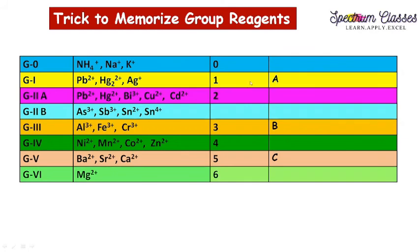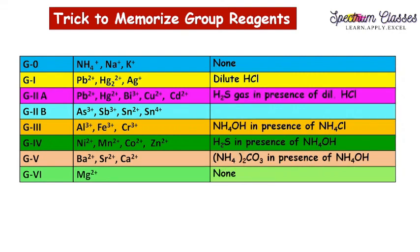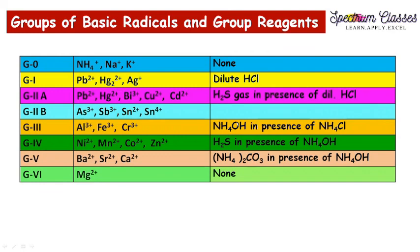For memorizing the group reagents, here is a funny but effective technique: remember ABC. 'A' is the first alphabet placed at the first odd group (Group One); 'B' is at the next odd group (Group Three); 'C' is at Group Five. A stands for acid, B stands for base, and C stands for carbonate. So Group One uses dilute acid, Group Three uses base (NH₄OH), and Group Five uses ammonium carbonate. Groups Two and Four are filled by H₂S gas. Groups Zero and Six have no specified group reagent.